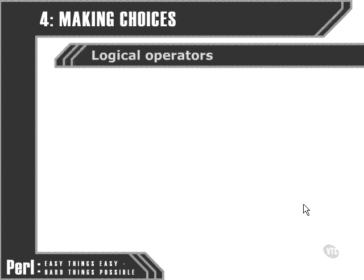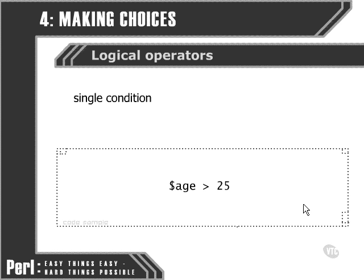Now we have the syntax to handle a number of different scenarios, but our conditions — the conditions that we're testing for in order to execute certain blocks of code or not — are still very simple. We're still only able to check on one very simple condition, such as the value of the variable age being greater than 25.